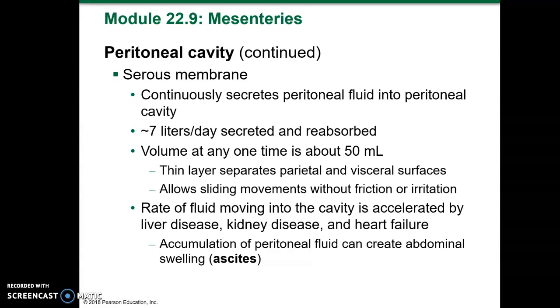The rate of fluid moving into the peritoneal cavity can be accelerated by liver disease, kidney disease, or heart failure. An accumulation of peritoneal fluid does happen and creates abdominal swelling, called ascites.